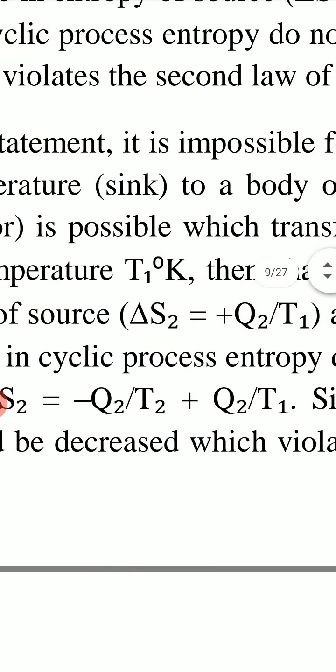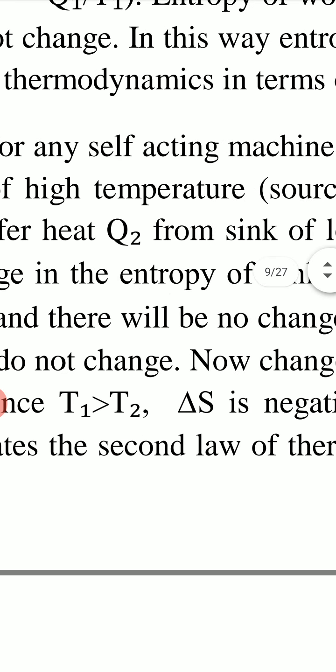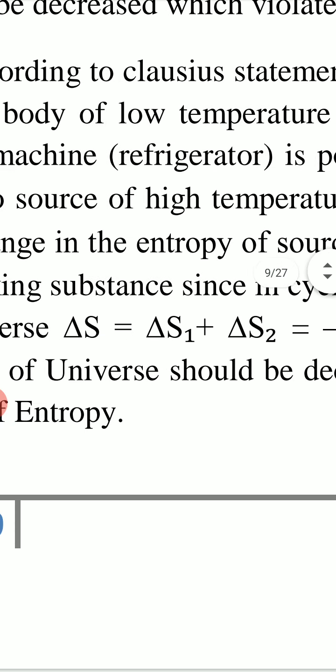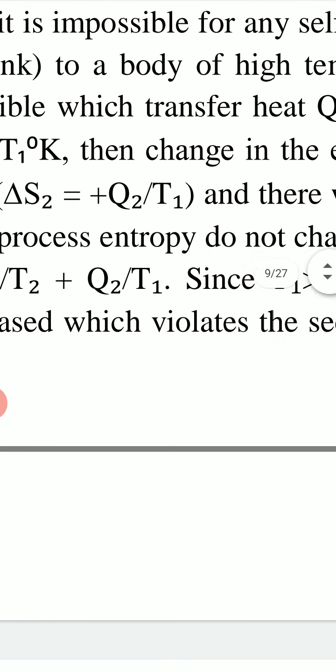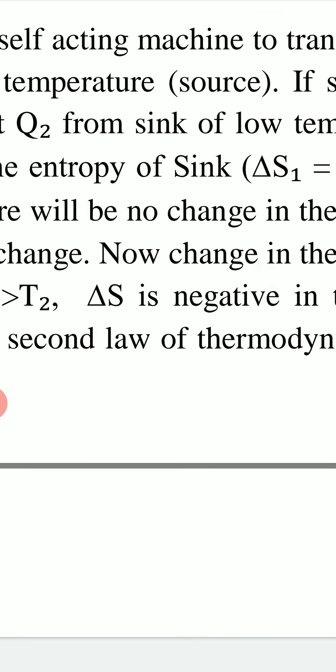Similarly, if we assume the Clausius statement is wrong — the Clausius statement says it is impossible for any self-acting machine to transfer heat from a body of low temperature to a body of high temperature without external work. Such a 100% efficient refrigerator is not possible; no self-acting machine can take heat from a low-temperature sink and give it to a high-temperature source without external work being done on it.